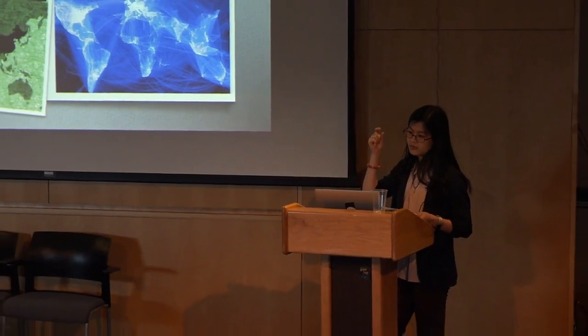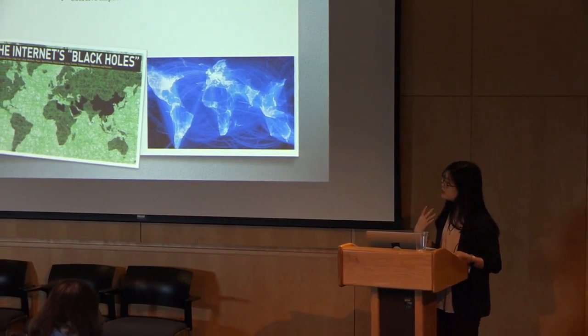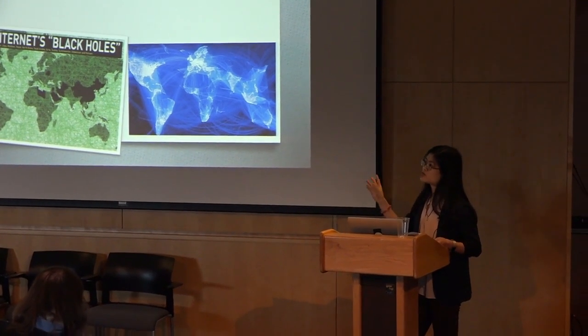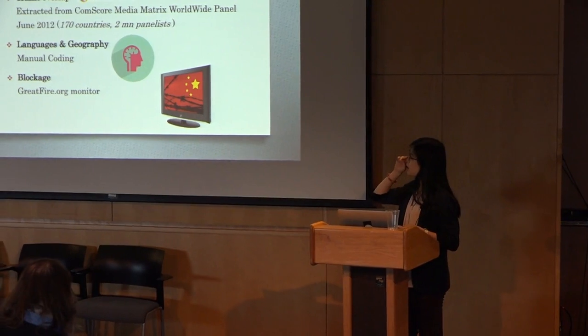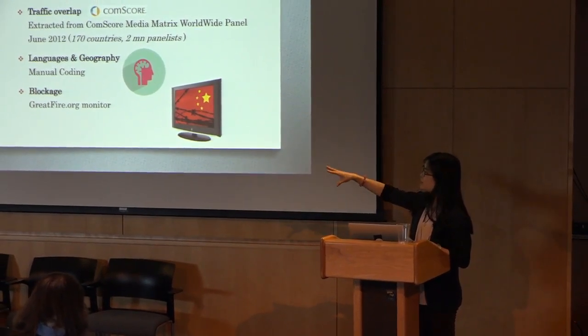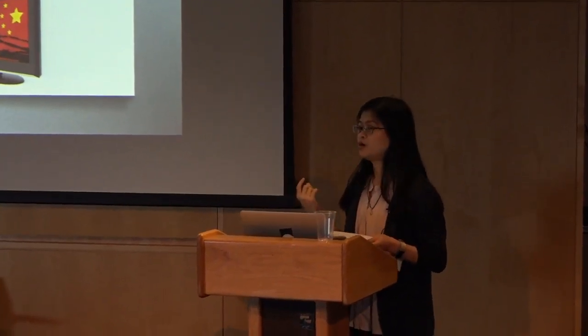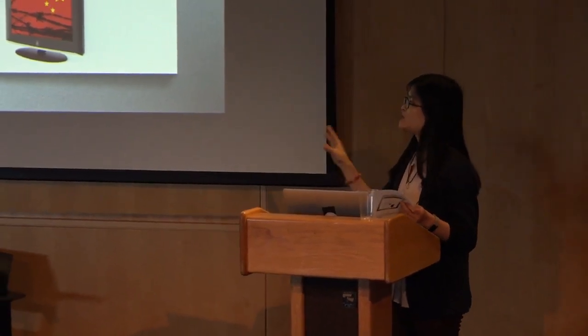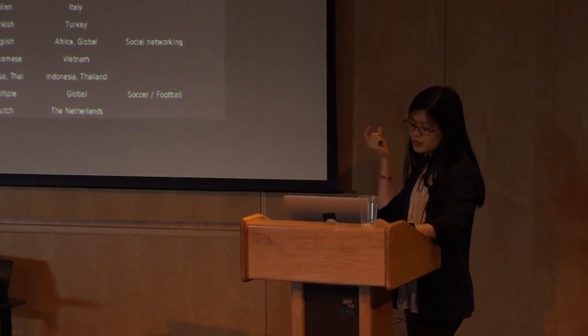What is missing, both in these images and in the dominant discourse, is the kind of local user activity and local content that's well alive in those black holes. To put this dominant view under scrutiny, we have this large-scale empirical study to look at what users actually do over there. Very briefly, we have three types of data: the traffic data from ComScore, human coding of the languages and geographic focus on these sites, and a third part of data which is the blockage records from Great Firewall. Greatfire.org is an online organization that tracks and tests the websites that the Great Firewall has been blocking.